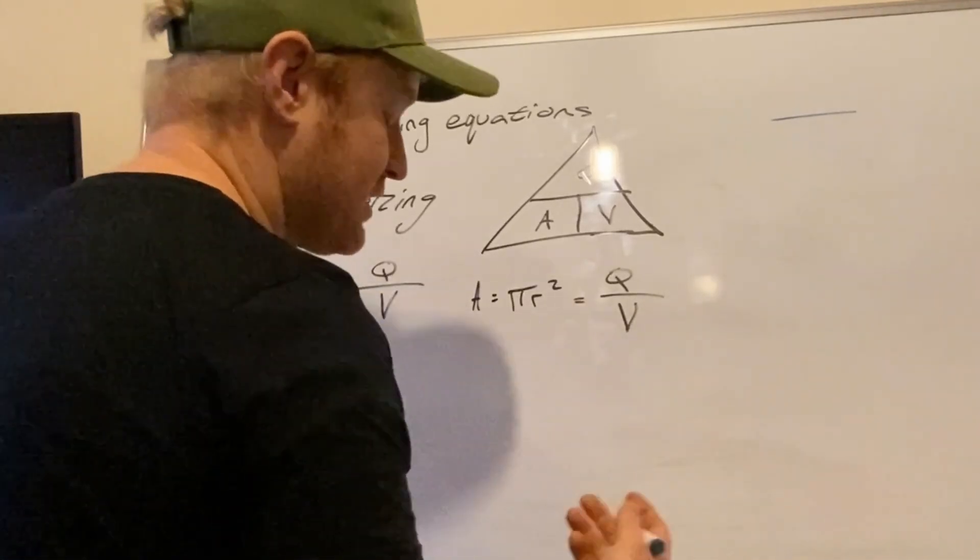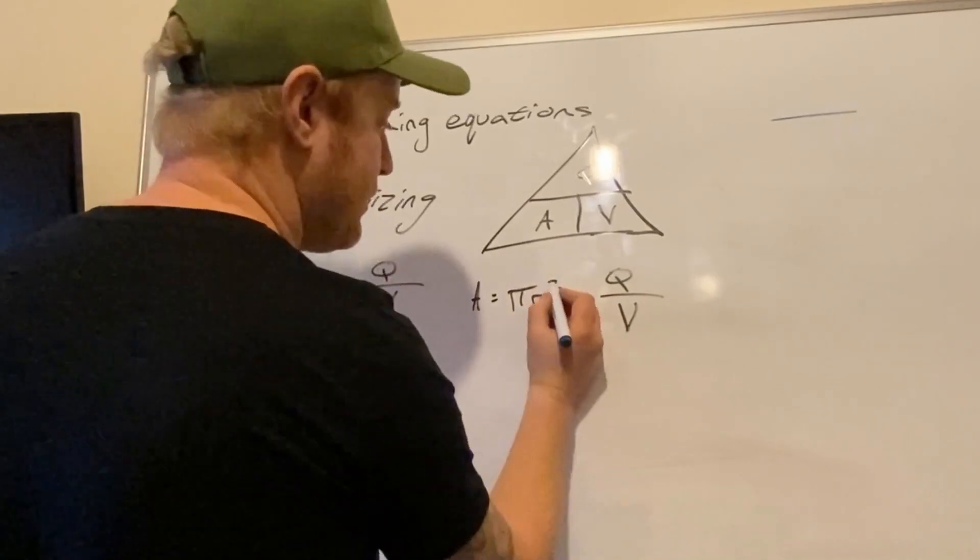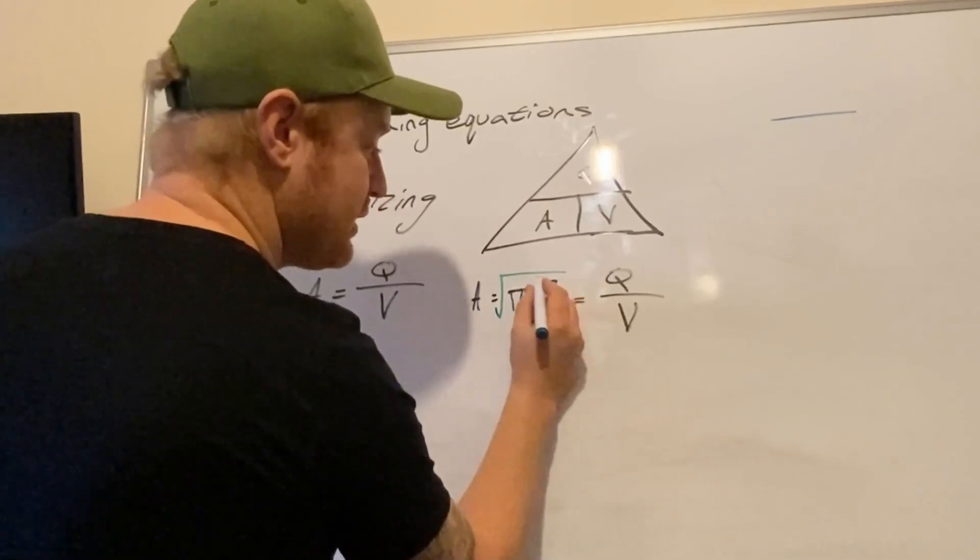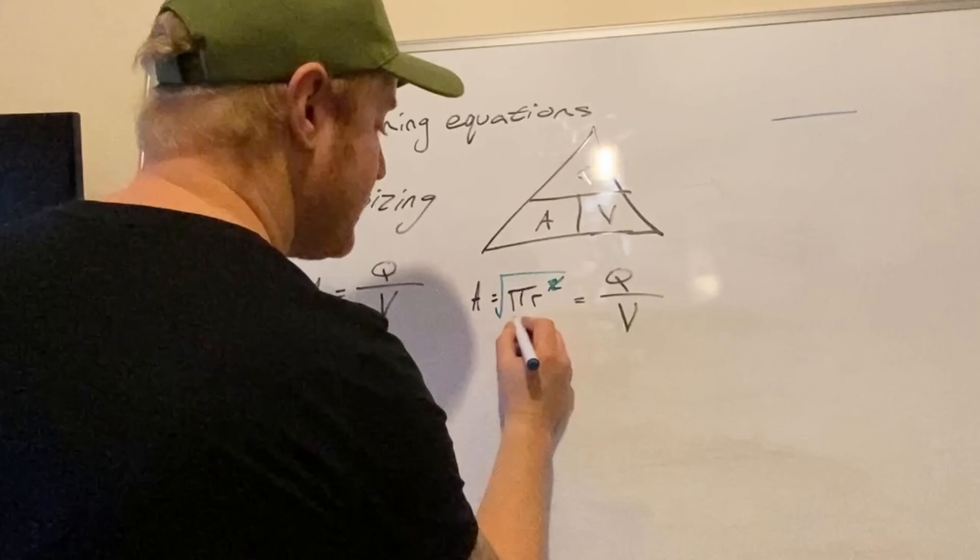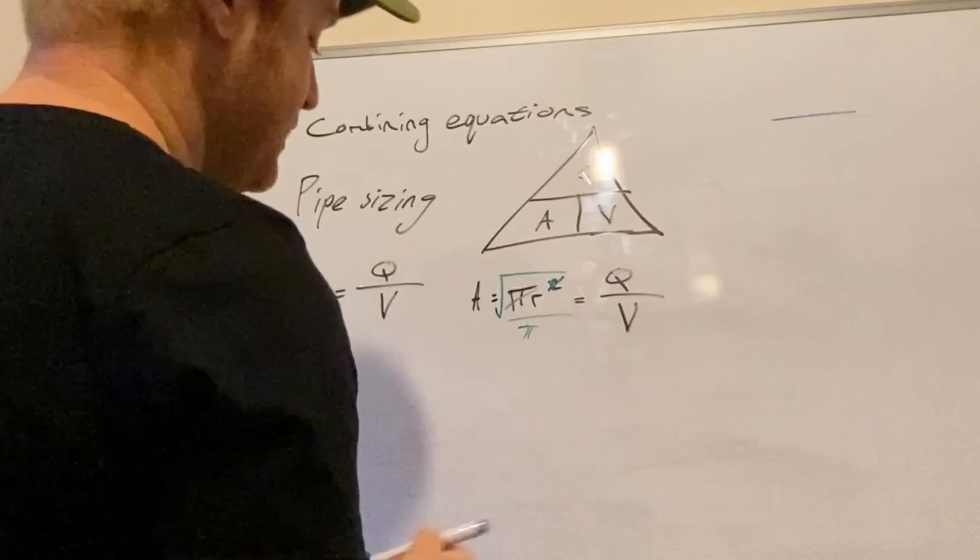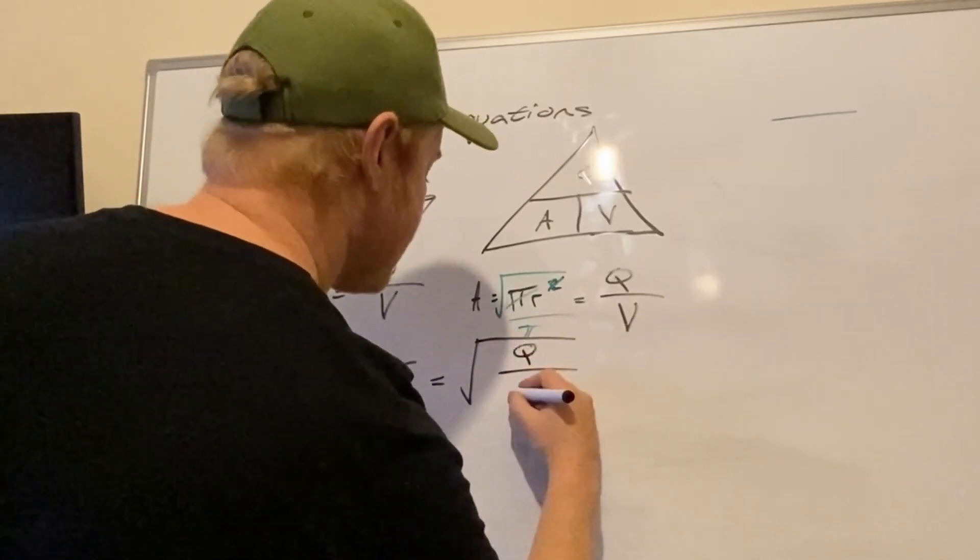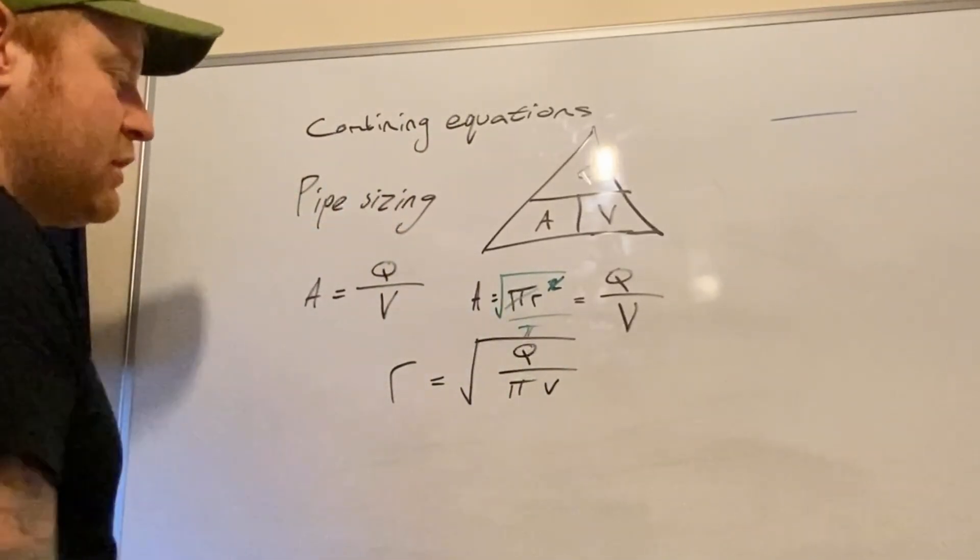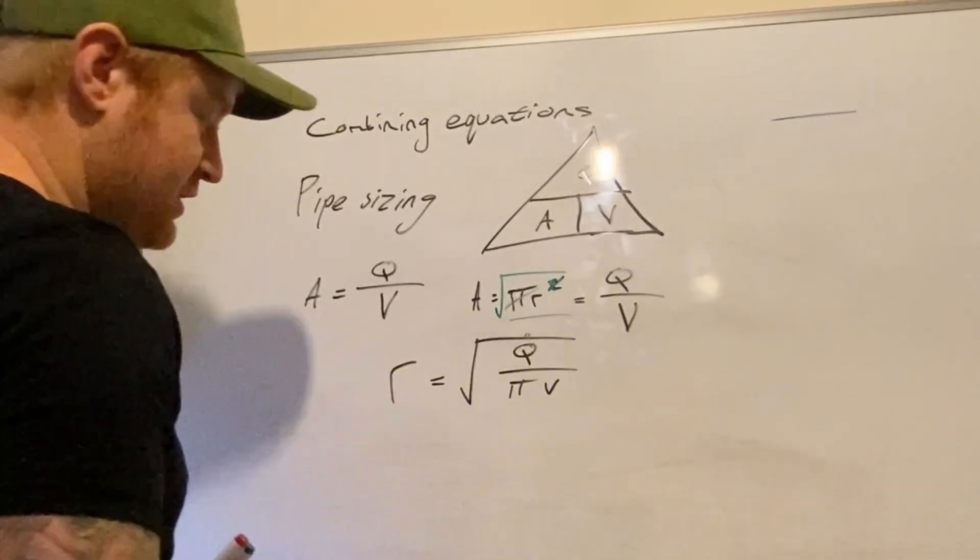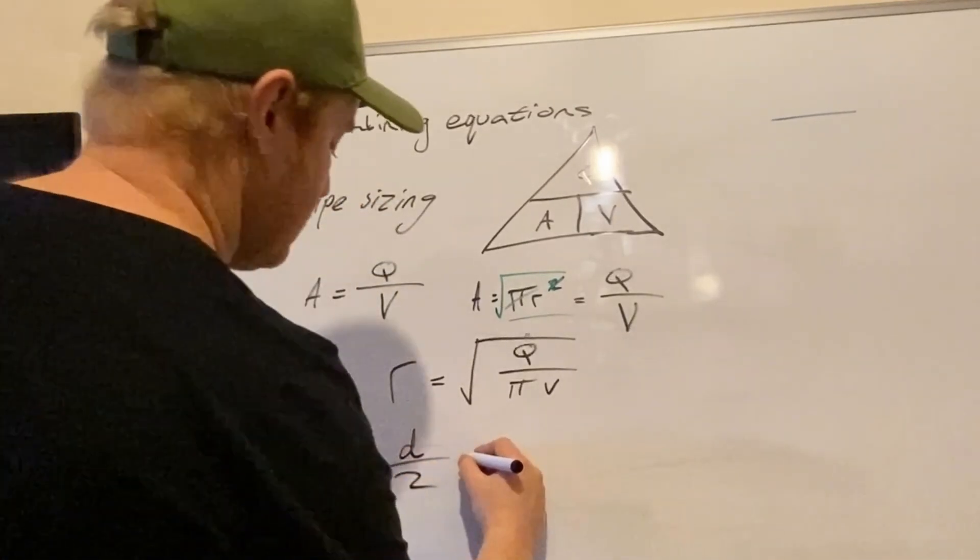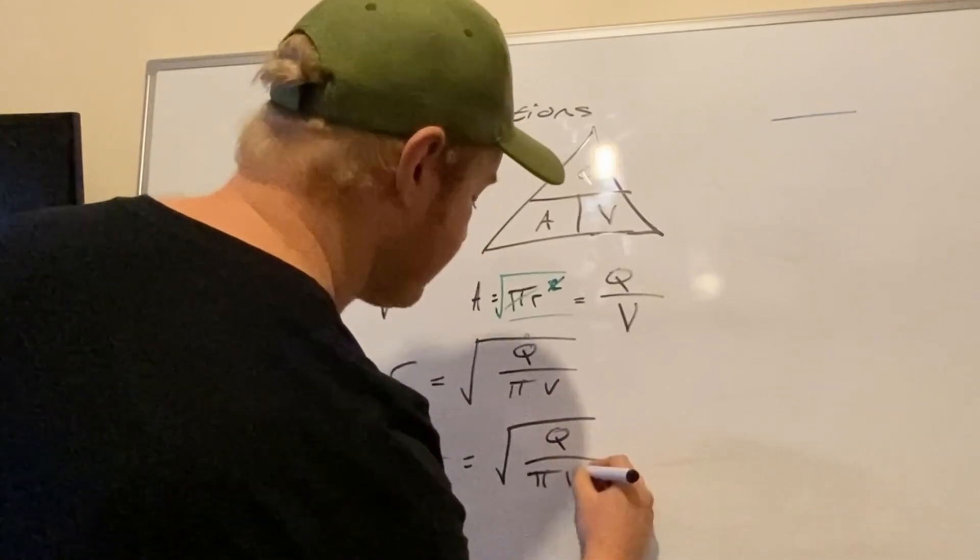We want radius, so more specifically, we want diameter, which is two times radius. So let's start by isolating radius. To get rid of the squared, you do the inverse operation, which is the square root. That strikes out the squared. And then to get rid of the π multiplied by, you do divide by π, which means that radius equals the square root of flow divided by π times velocity. But we don't want the radius, we want the diameter. So radius is diameter divided by two times square root of flow divided by π times velocity.